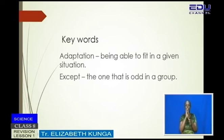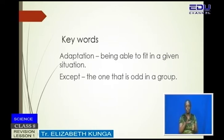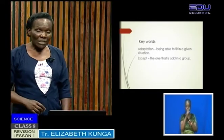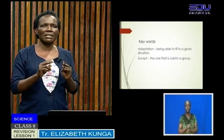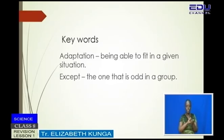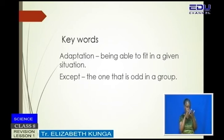But the main thing in the question is 'except'. All the others are the ways plants adapt — the characters that make them adapt. But there's only one that is not for that particular question. So when you look at the question, look at the keywords. There are two keywords in this question: adaptation and except.